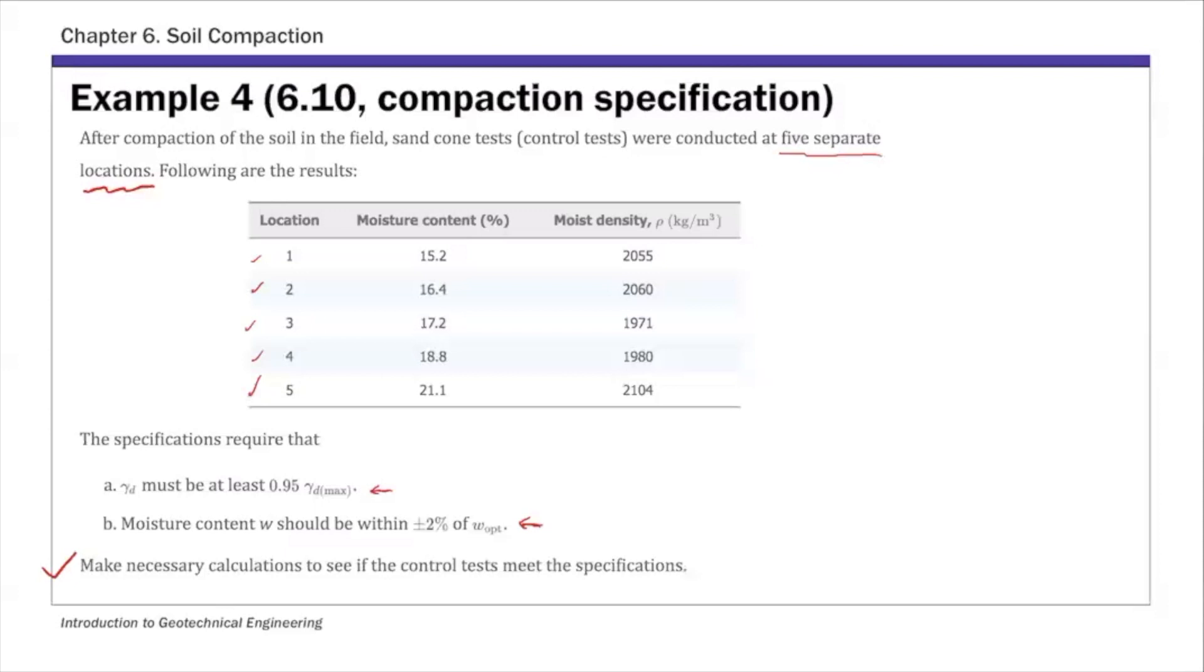And for this example, so given first, given this sand cone method, first you can calculate in-situ dry unit weight. We're going to use kilonewton per meter cube. And to calculate this again, this gamma d field is gamma moist field over one plus moisture content.